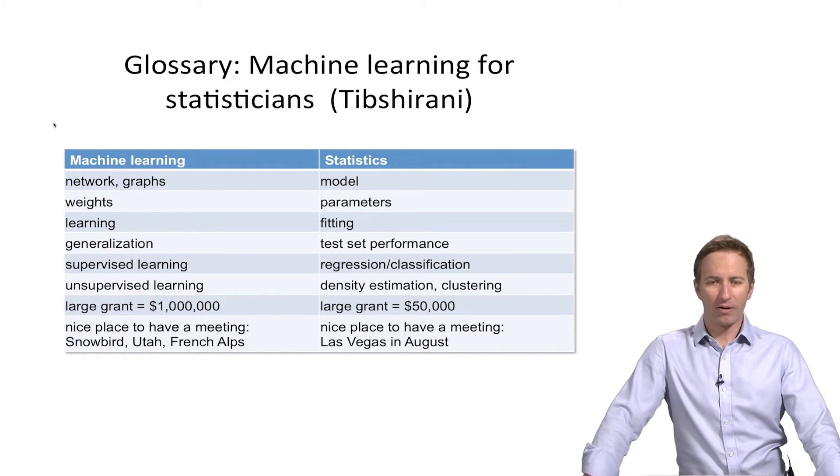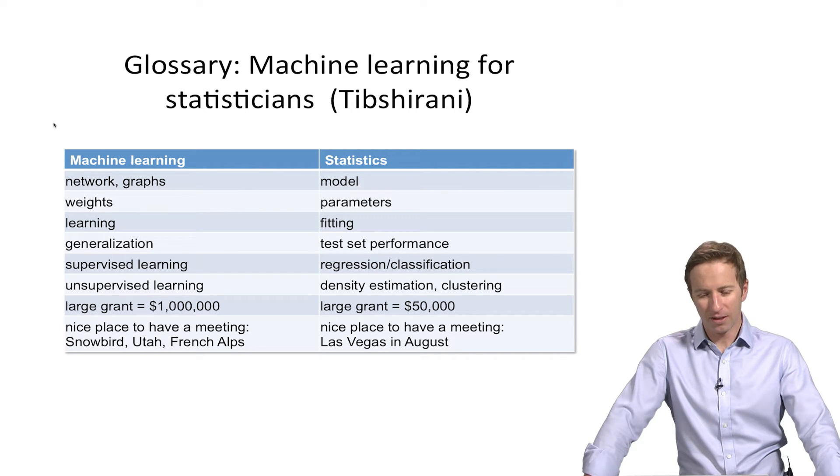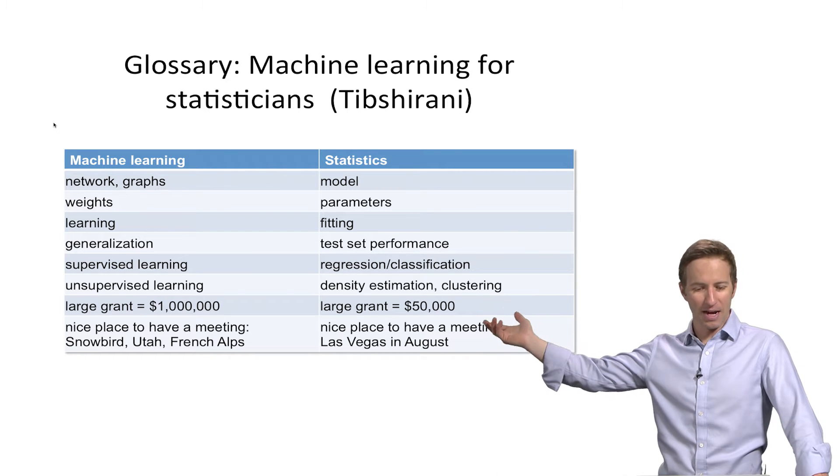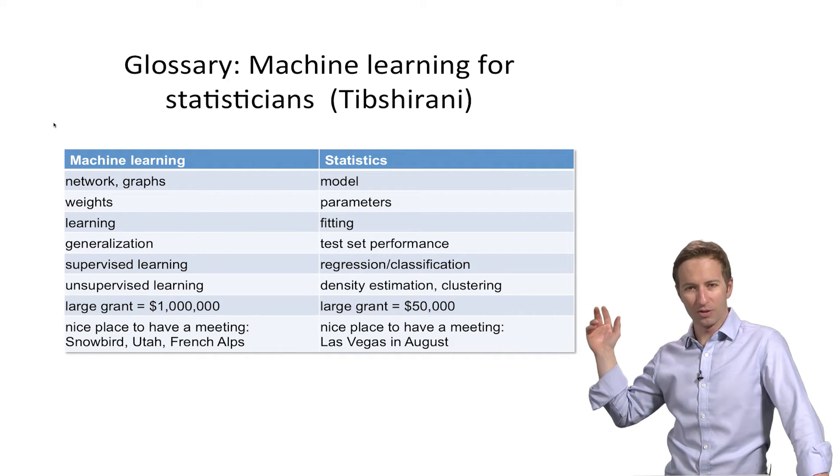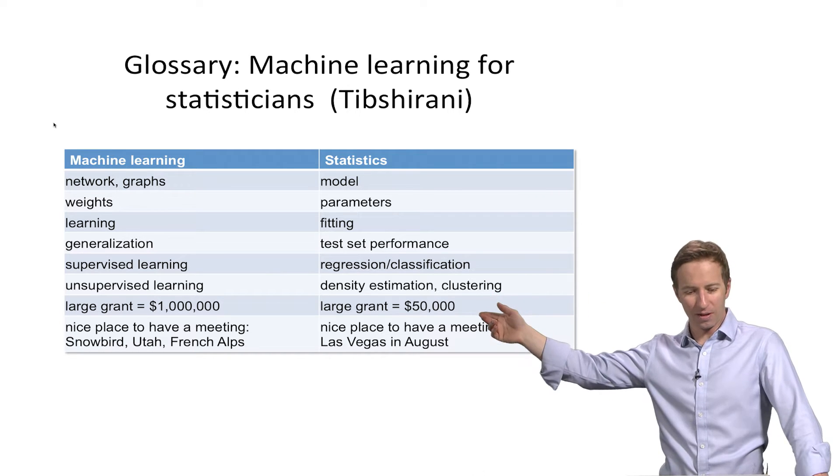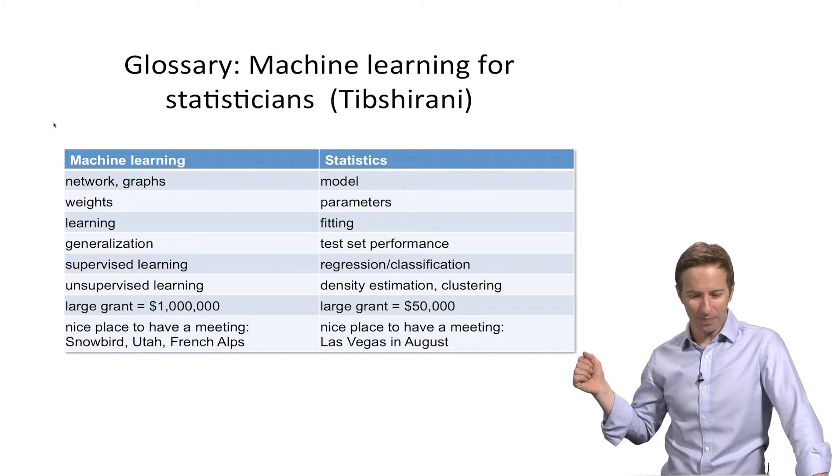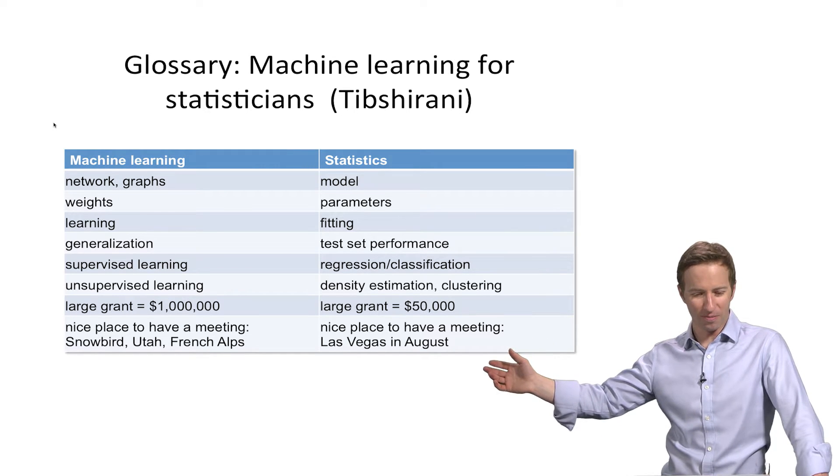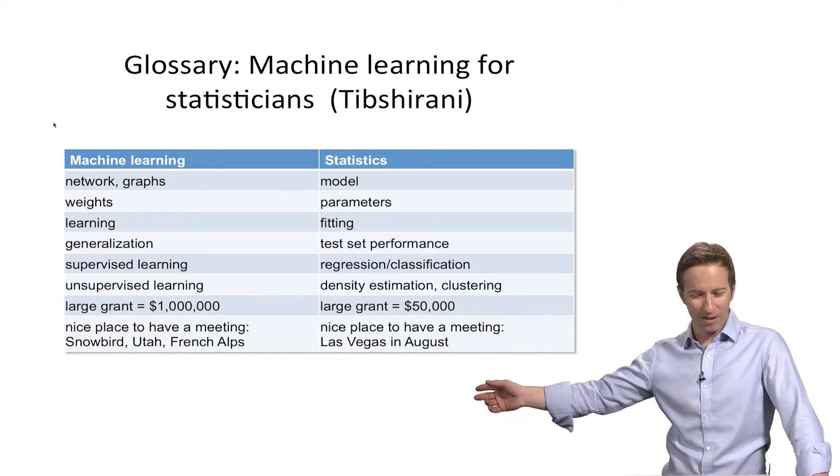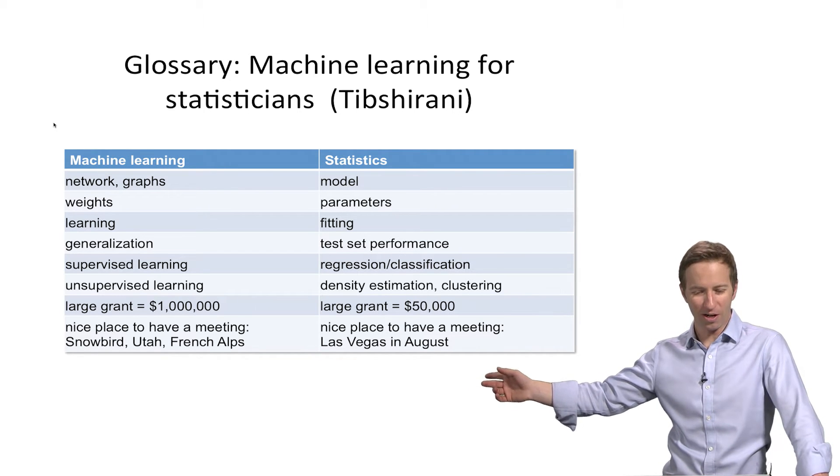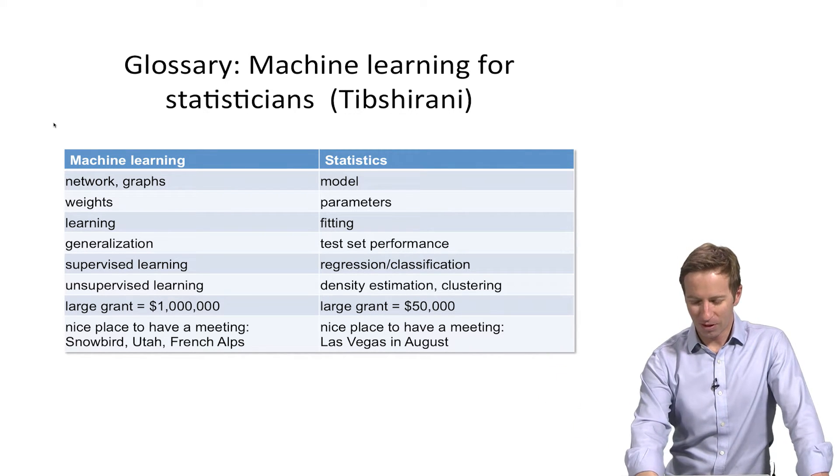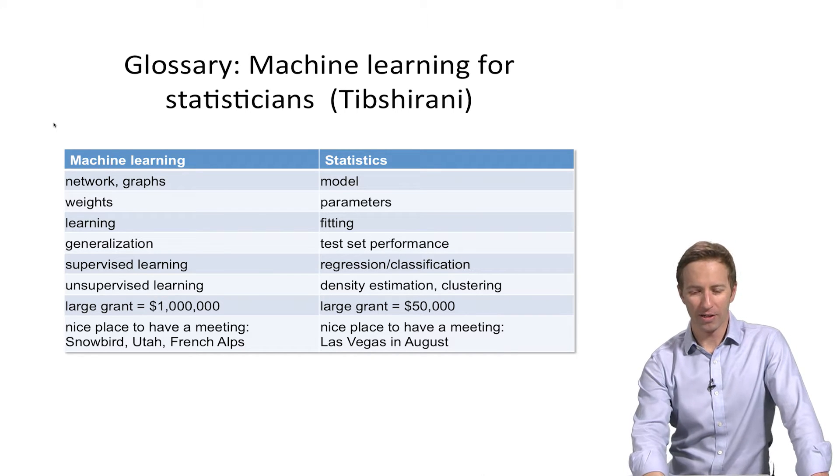For those of you who have a background in statistics I love this glossary that Robert Tibshirani put together so you can see where a statistician might say model machine learning person might say network or graphs. A statistician might say parameters whereas a machine learning expert would say weights. And then finally a large grant in statistics is about fifty thousand while a large grant in machine learning is a million. A nice place to have a meeting in machine learning is Snowbird, Utah, the French Alps. A nice place to have a meeting in statistics is Las Vegas in August. So that's just a little glossary for those of you who have a background in statistics.